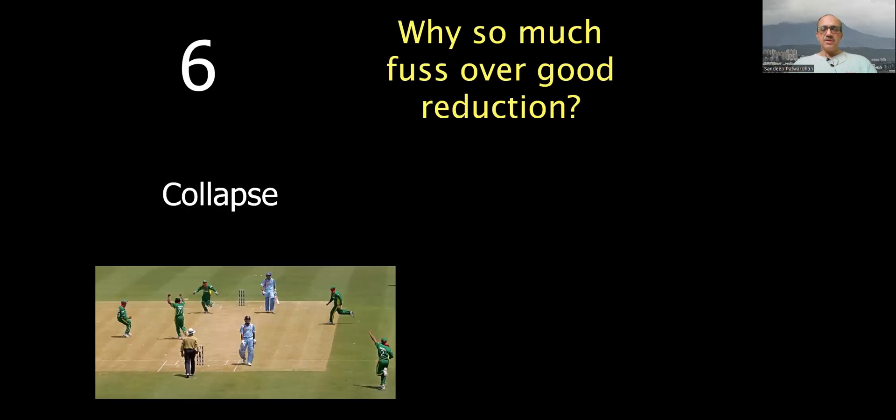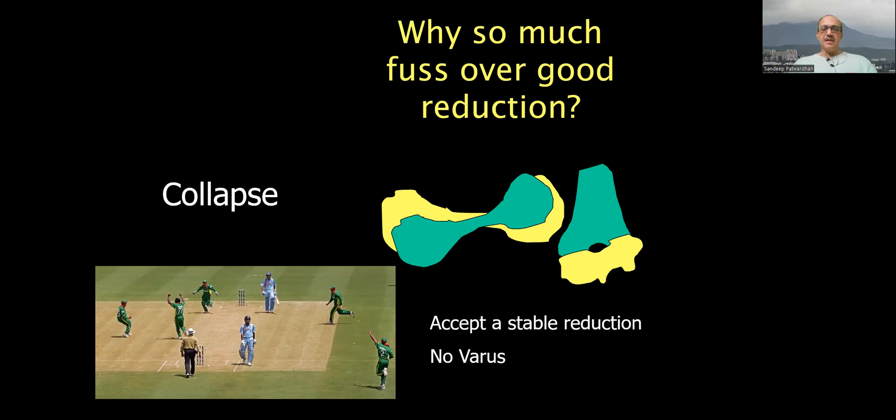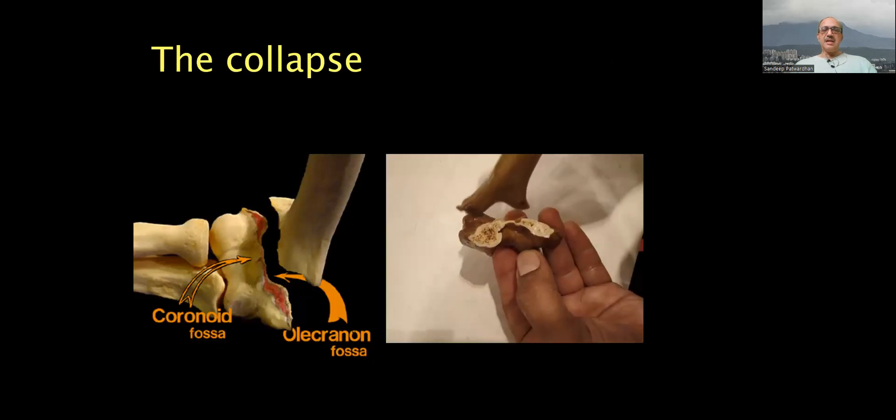Why do we fuss about so much about reduction? Because if there is slight malrotation, it will collapse into varus. So we should not accept a varus reduction. And this is an example to show you the pillar configuration is very important.